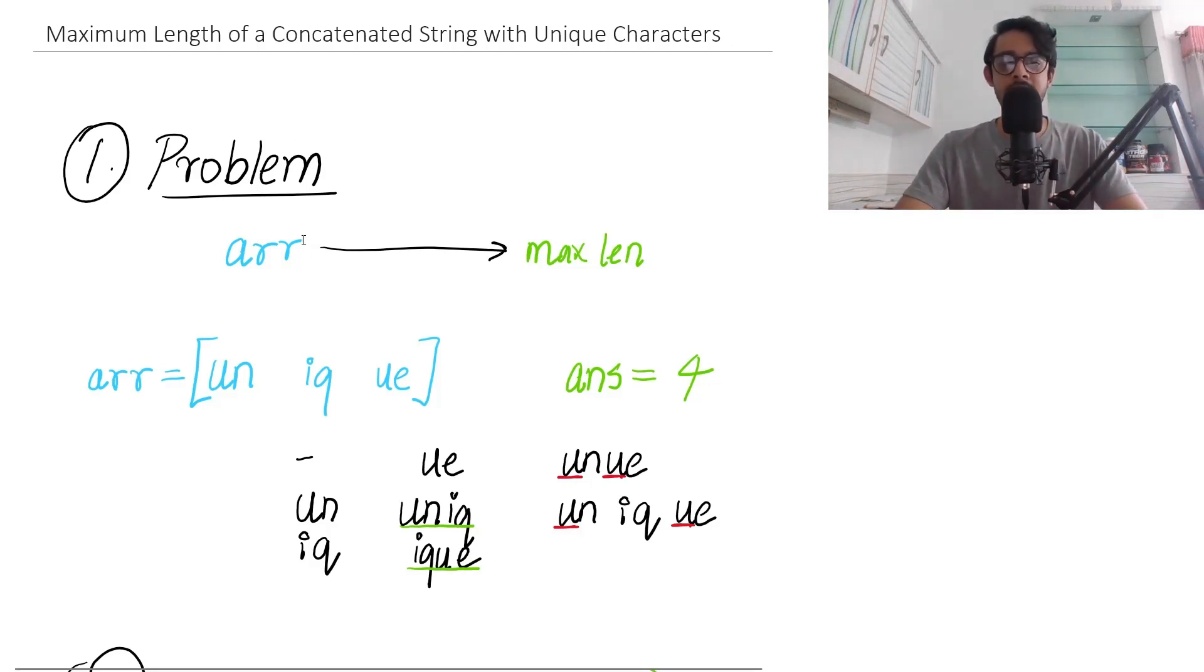You're given this array as an input which is a list of strings. I've taken the case of un, iq, and ue. The question says you want to enumerate all the subsequences and find one that follows both conditions: maximum length and unique characters only.